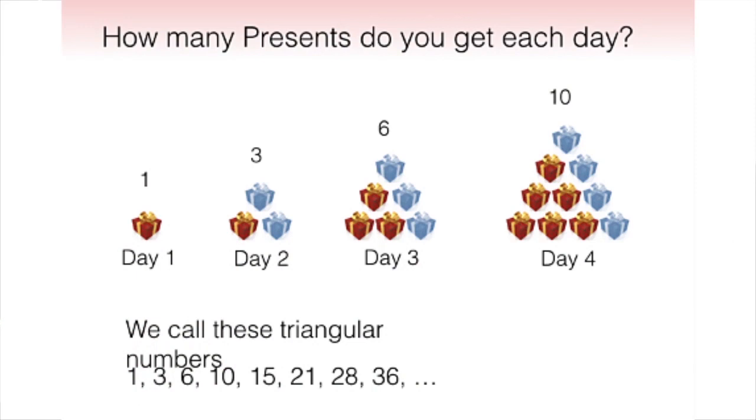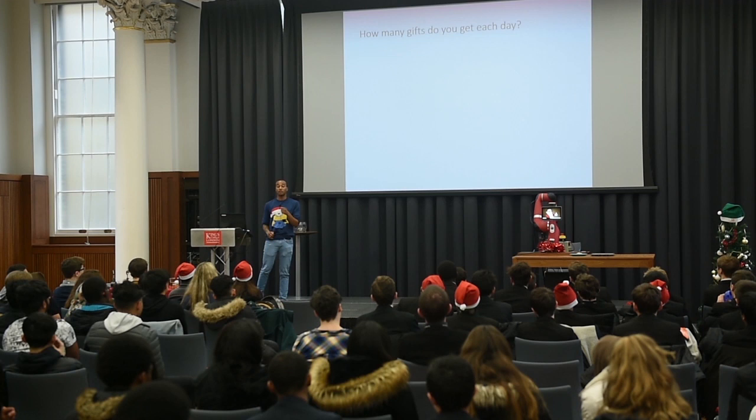Does anyone know what this sequence of numbers is called? Pascal's triangle — not far off. These are the triangular numbers, because I can arrange them in these nice equilateral triangles. Each time you go up one, you add an extra n. The task is to count these, and I need an efficient way to count them.